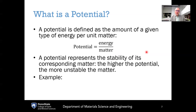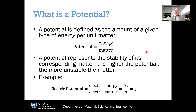A commonly known example of a potential is the electric potential. The electric potential is defined as the amount of electric energy U_E divided by the amount of electric matter, the total charge Q. Dividing those two together gives the electrical potential — the voltage of the system — which has units of volts.